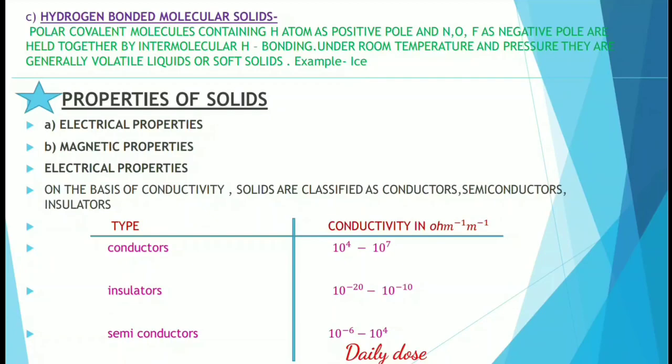The last type is hydrogen-bonded molecular solids. These consist of polar covalent molecules containing a hydrogen atom as the positive pole and nitrogen, oxygen, or fluorine as the negative pole, held together by intermolecular hydrogen bonding. Under room temperature and pressure they are generally volatile liquids or soft solids. An example is ice.